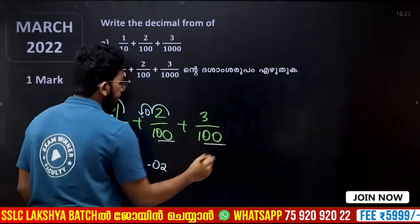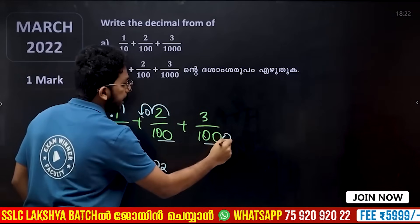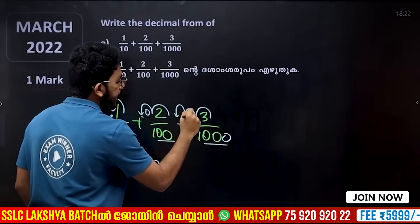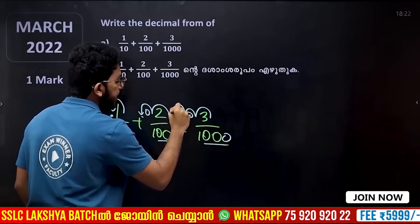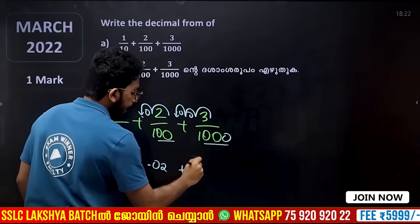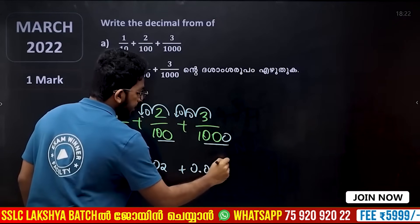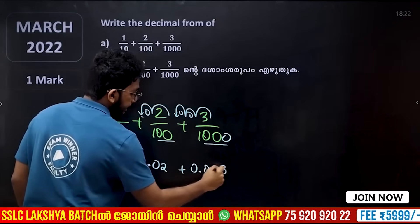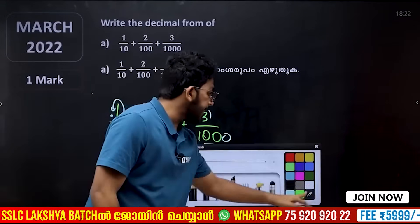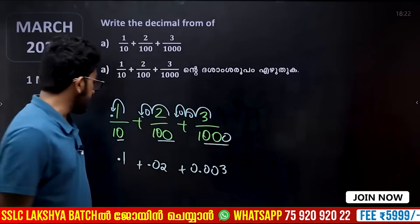Here we have 2 chart, here we have 3 chart, 1 chart, 3 chart, here we have 2 chart, here we have 0.003, here we have 2 chart. If you want to add here, it's very simple.